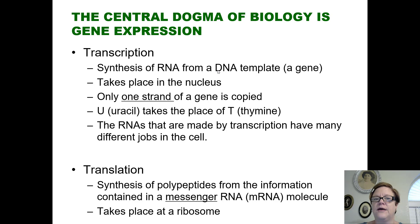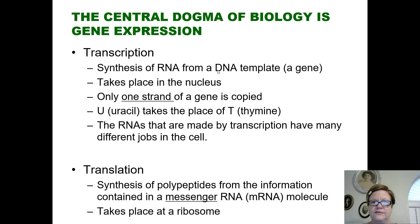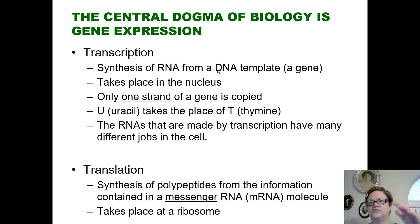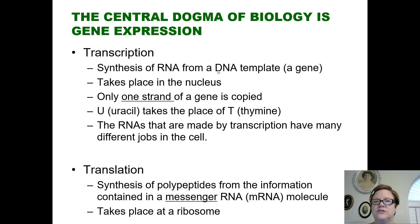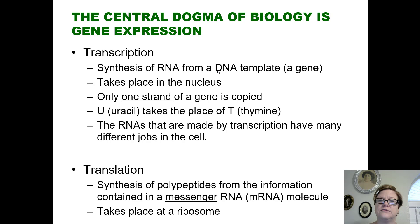Only one strand of a gene is copied. In DNA replication, both strands have to be copied, but in transcription it's much simpler — only one strand is copied. It's copied continuously from the 5' end to the 3' end of the new strand of RNA. We call that strand the template strand, and the other strand is the non-template strand. RNA has uracil substituted for thymine — they're both pyrimidines with a slight functional group difference.